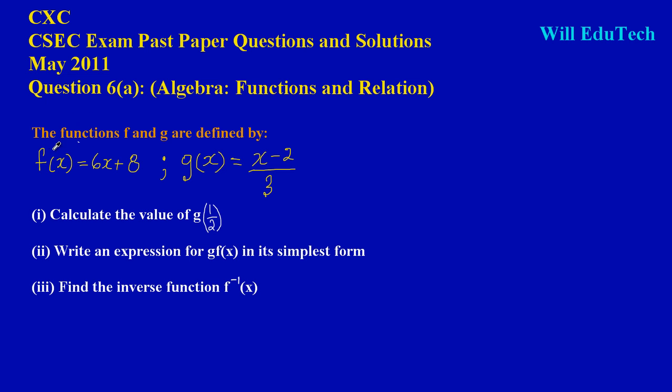It states that the functions f and g are defined by: the function f(x) is equal to 6x + 8, and the function g(x) is equal to (x - 2)/3.